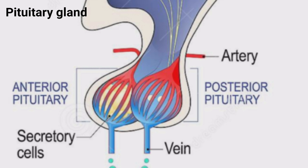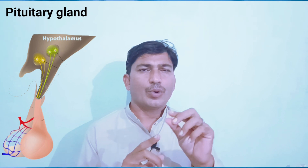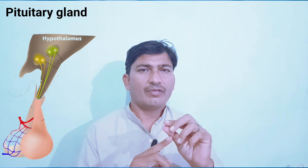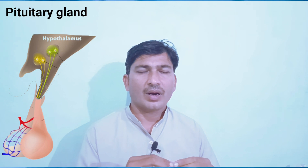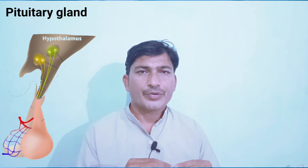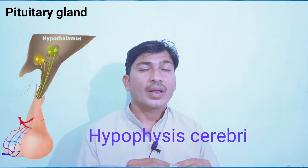The pituitary gland has two lobes. On the anterior side, the lobe is called the anterior pituitary lobe. On the posterior side, the lobe is called the posterior lobe. The pituitary gland is very small — about one centimeter in length — and its weight is approximately 0.5 grams, or half a gram. It is also known as hypophysis cerebri.